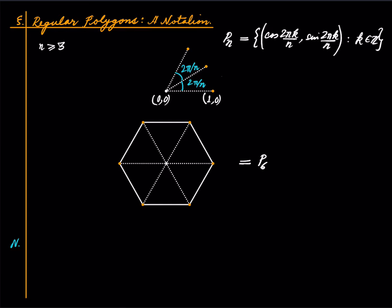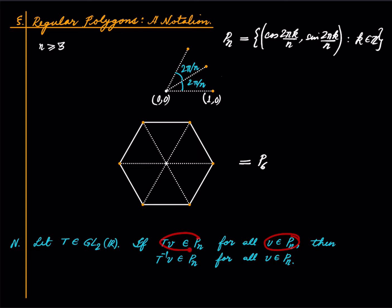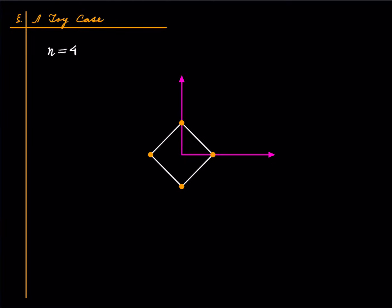Notice one fact: if T is some invertible linear map of R2 such that whenever you pick a vertex v in Pn, T(v) is also in Pn, then it follows that the inverse of T also has the same property — meaning T inverse of v will again be in Pn. This follows simply from the finiteness of Pn. I leave this for you to check and we'll use it shortly.